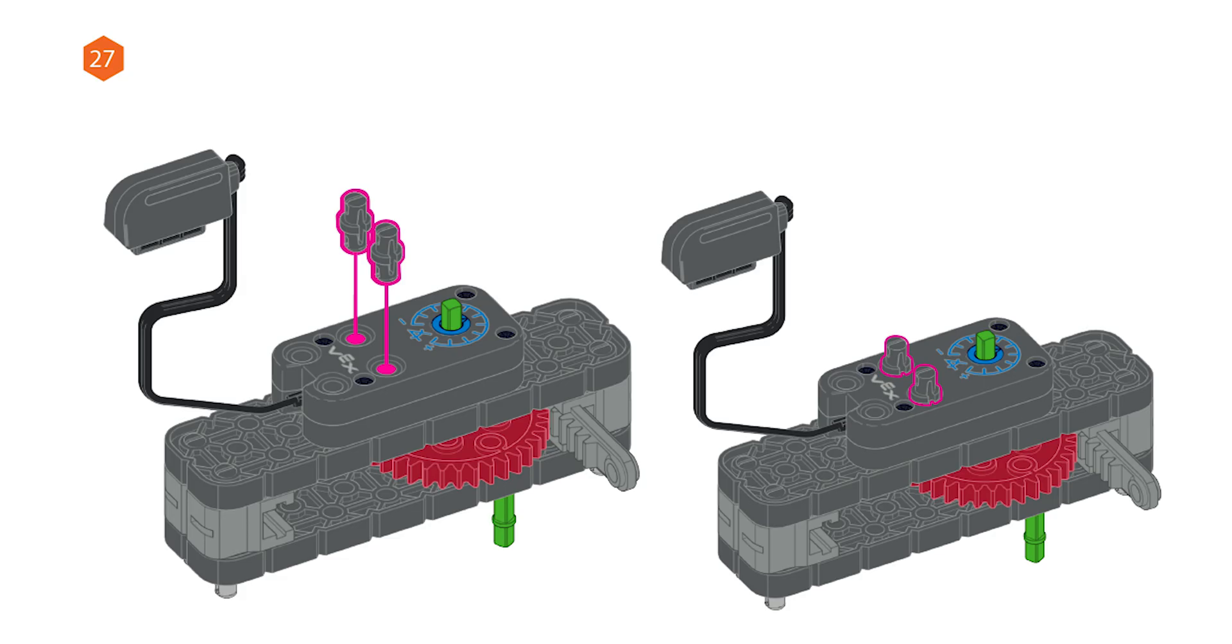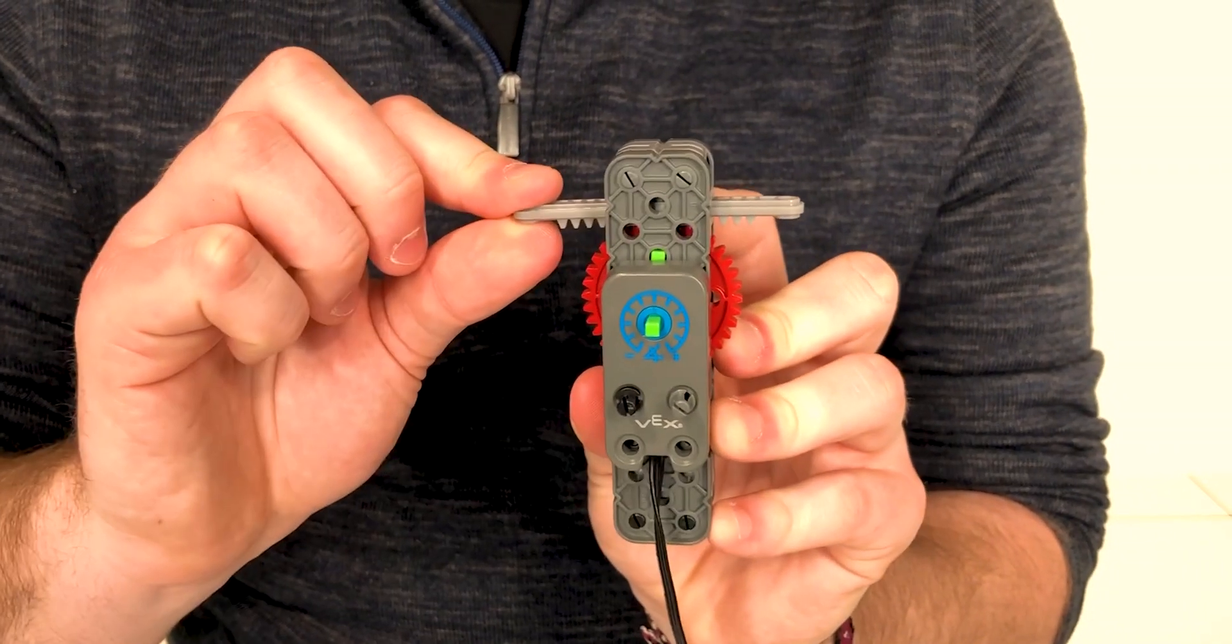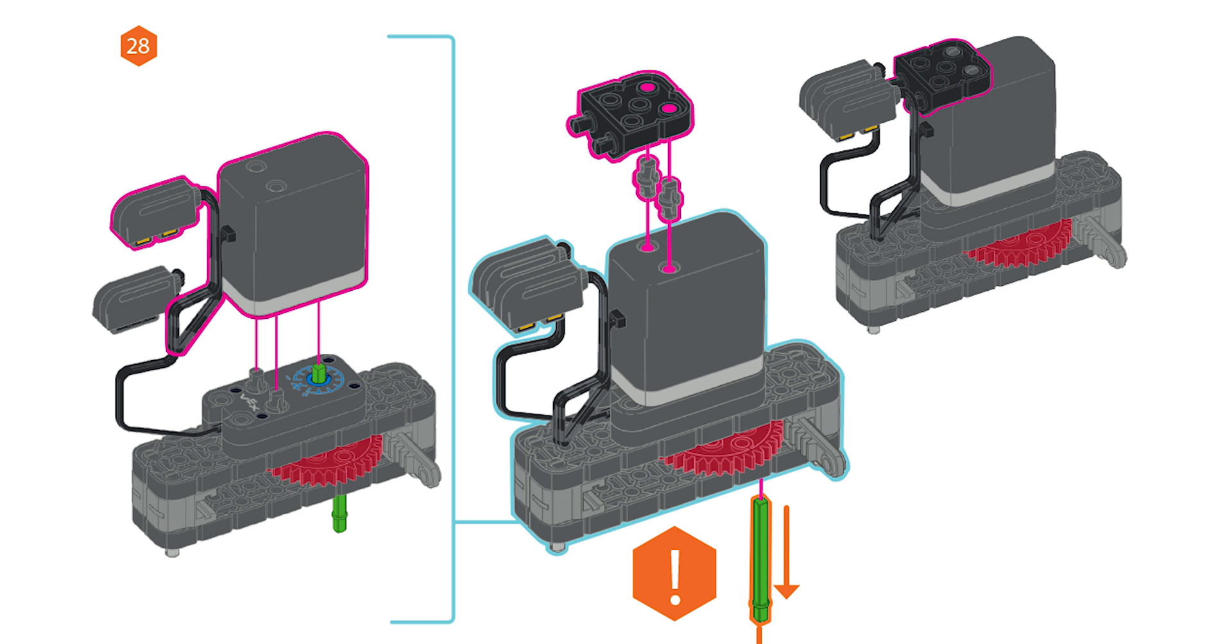Step 27: place two pins here on top of the angle sensor. Be sure that the gears are still locked into position. Step 28: secure the motor on top of the angle sensor, aligning the shaft so that the motor, angle sensor, and the red gear are connected by the single green shaft.